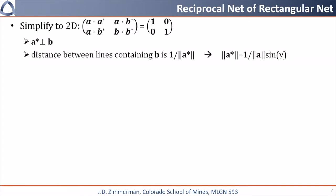Now I'd like to show you what the reciprocal net of a rectangular net would look like. We are going to simplify the three by three matrix from the last slide into a two by two matrix. Remember that a star is perpendicular to b star, and the distance between lines containing b is going to be one divided by the magnitude of a star.